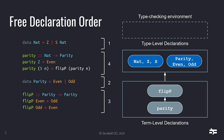That's where the type checking environment comes into play. When GHC type checks the parity function and encounters flipP, it looks that function up in the type checking environment — which should contain information about flipP's type, how many arguments it takes, and so on. In order for flipP to already be in the environment when we type check parity, we need to type check flipP before parity. That's the job of dependency analysis: to analyze the code and order things so they type check.